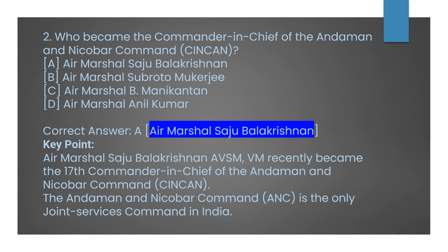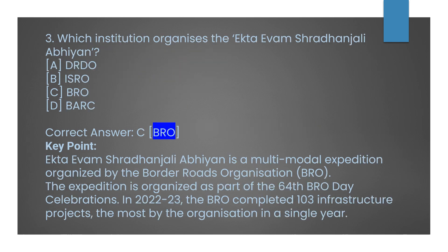Question number two: who became the Commander-in-Chief of the Andaman and Nicobar Command, known in short as CINCAN? Option A: Air Marshal Saju Balakrishnan. Option B: Air Marshal Subroto Mukherjee. Option C: Air Marshal B. Manikantan. Option D: Air Marshal Anil Kumar. The correct answer is Option A, Air Marshal Saju Balakrishnan (AVSM, VM), who recently became the 17th Commander-in-Chief of the Andaman and Nicobar Command — the only joint services command in India.